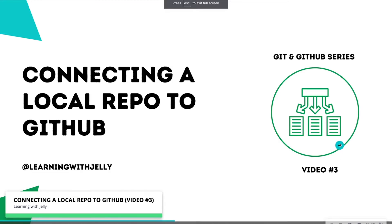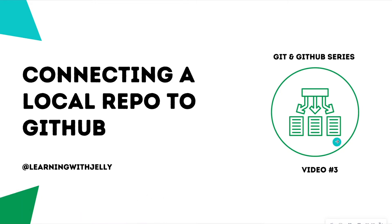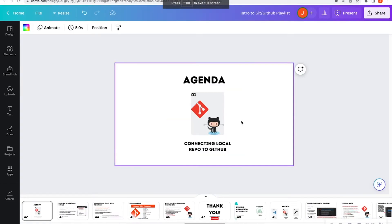Hello everyone, and welcome back to Learning with Jelly. Today we're on video three of our Git and GitHub series, and we're going to talk about how we can connect a local repo to GitHub. Before we actually create a GitHub repository so that we're able to connect what we locally have on our computer to GitHub itself, let me walk you through what we did in the previous video.